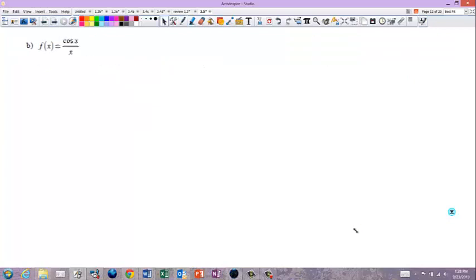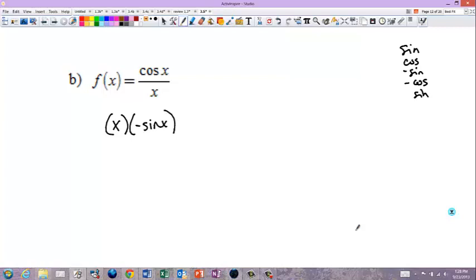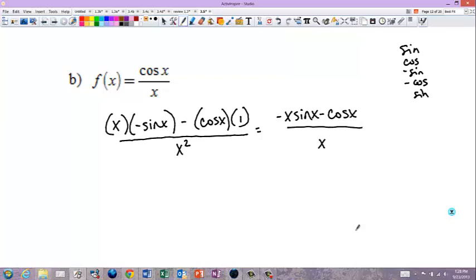This one is a quotient rule. We have low, we have high. And sine, cosine, negative sine, negative cosine, sine. The derivative, so it's low, d high, the derivative of a cosine is negative sine, minus high, d low, over the square of what's below. If you want to clean it up, you can be negative x, sine of x, minus cosine of x, over x squared. And that's as simple as you can get it. Just stop right there.